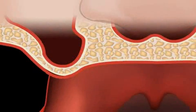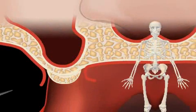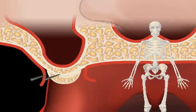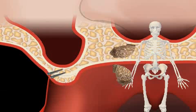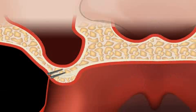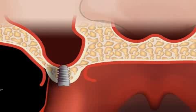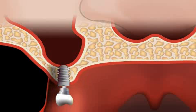In the animation, you see a so-called onlay plastic. The patient's own bone is extracted, for example from the jaw angle, and transplanted to the desired location. This re-establishes the sufficient bone height for an implant, and thus for a fixed dental prosthesis.